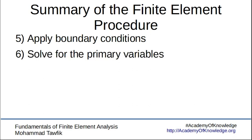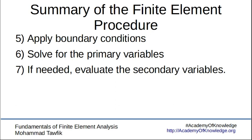The sixth step is solving for the primary variables. The primary values are the unknown values of the function at the nodes — the set of equations generated when we apply the boundary conditions on the assembled matrix of the domain. The last step, if needed, is to evaluate the secondary variables. In many problems we will need to do this, which is why the secondary set of equations is usually quite important. But in some special problems, these are not of any interest, so we just ignore the secondary variables and equations.